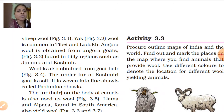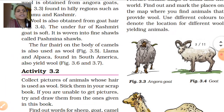Wool is also obtained from goat. The under fur of Kashmiri goat is soft and is woven into fine shawls called Pashmina shawls. The fur on the body of camels is also used as wool. Llama and alpaca, found in South America, also yield wool.